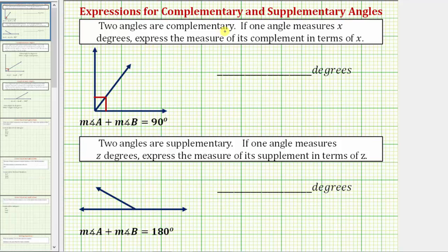We're told two angles are complementary. If two angles are complementary, the sum of their measures equals 90 degrees, which means if you were to combine the two angles, they would form a 90 degree angle, or a right angle, as shown here.